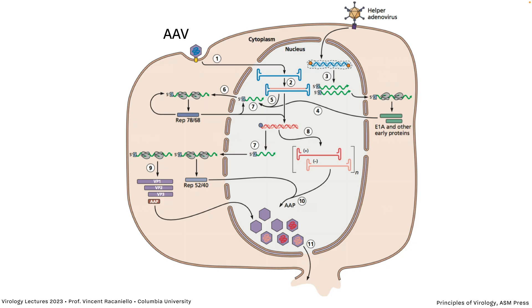AAV needs to be infecting a cell which is also infected with a helper — either adenovirus or herpes virus. AAV has that weird single-stranded DNA genome with the base-paired ends. E1A, which you remember as being involved in stimulating cell growth, is needed for the production of the early mRNAs of the virus. A couple of other functions are also needed from adenovirus.